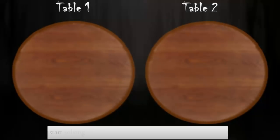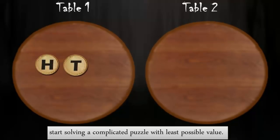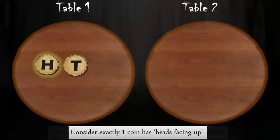As I always say, start solving a complicated puzzle with the least possible value. So, we can consider a case of two coins placed on table 1. Consider exactly one coin has heads facing up.